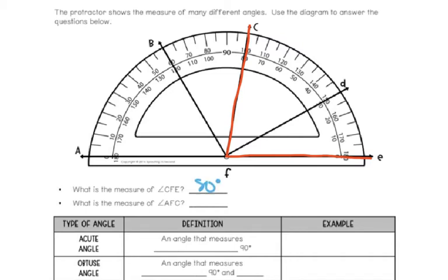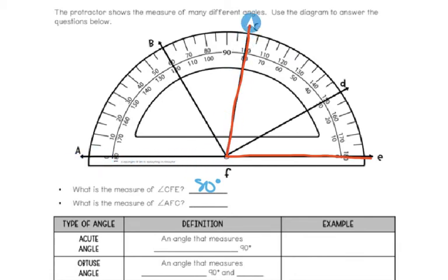One way to double check that you're using the top or bottom number: if I look at angle CFE, I see that it is just a little bit narrower — a little more acute — than a 90 degree angle. Since 90 degrees is right here, I can see that angle is less than 90, so I would want the number less than 90, which in this case is 80. However, looking from the other direction, I would see it's a little more obtuse, and I would go with that 100 degree reading.